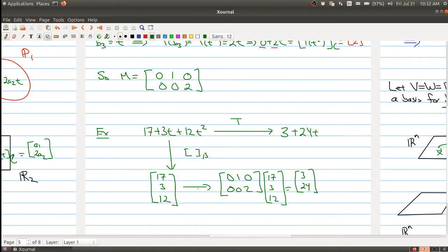But notice that when you multiply it by M, you get (3, 24). And that vector is exactly what you would get if you were to take this polynomial and you map it down to its coordinate with respect to the C basis, because the 3 is telling you the constant coefficient and the 24 is telling you the coefficient of t.